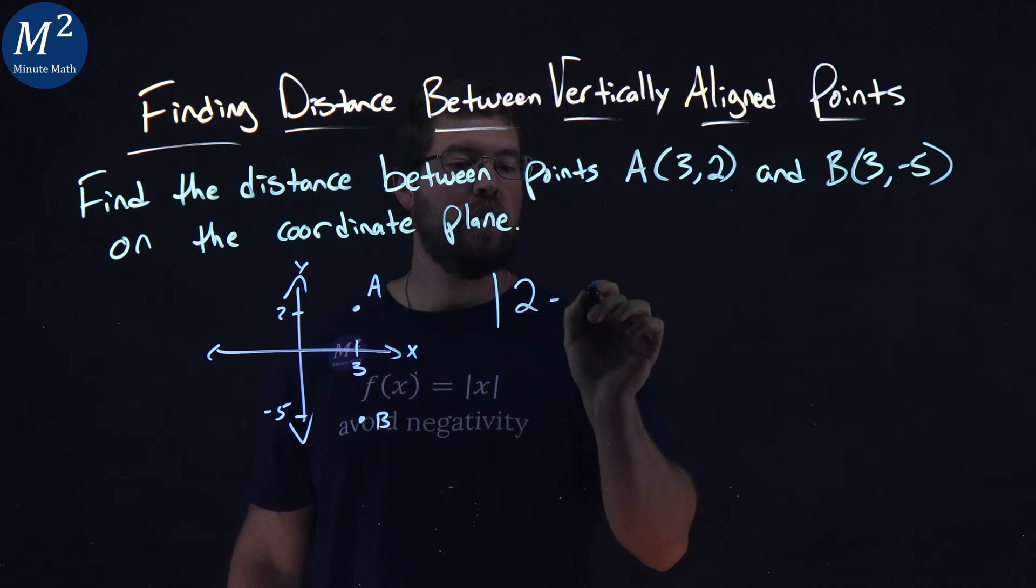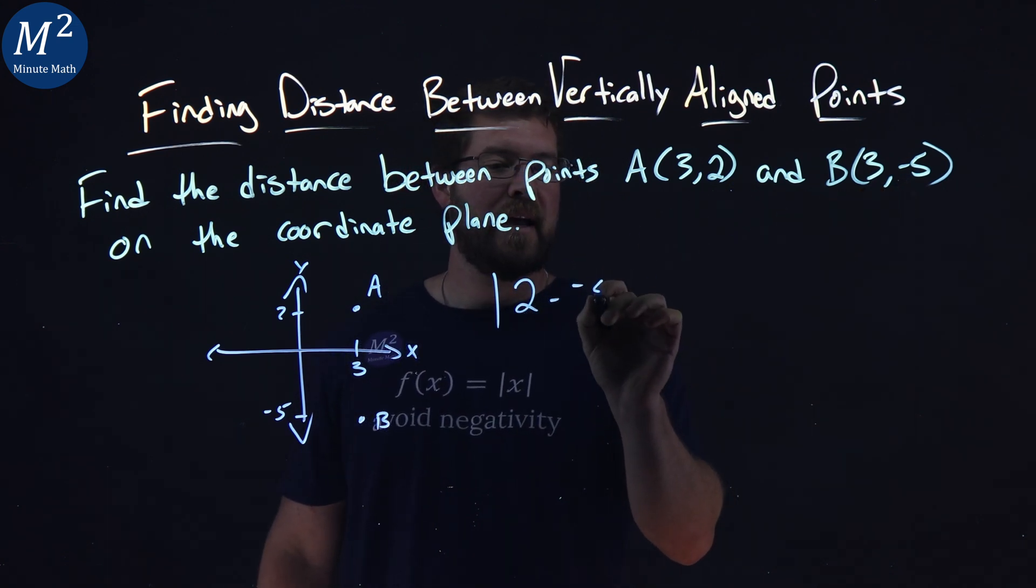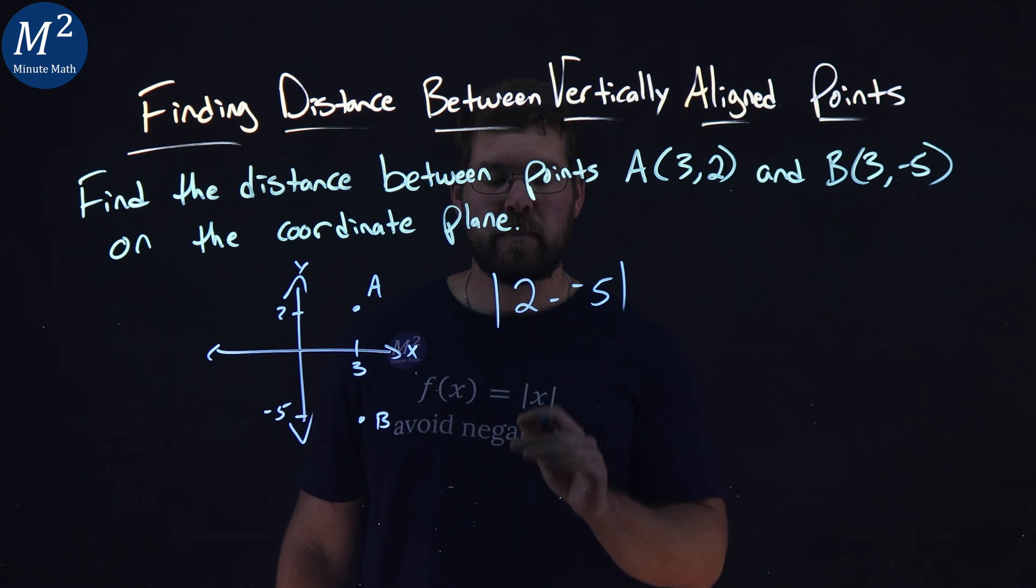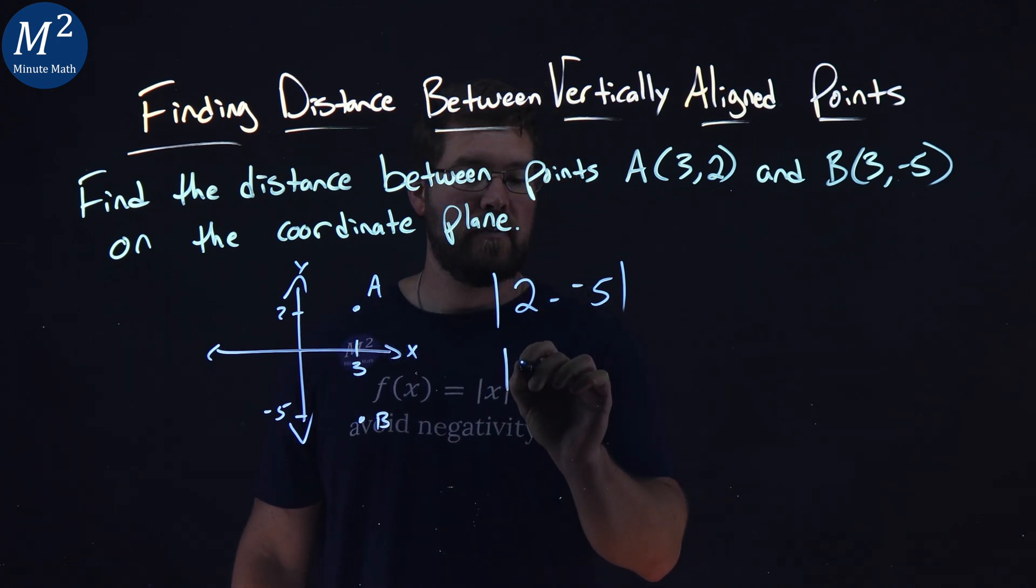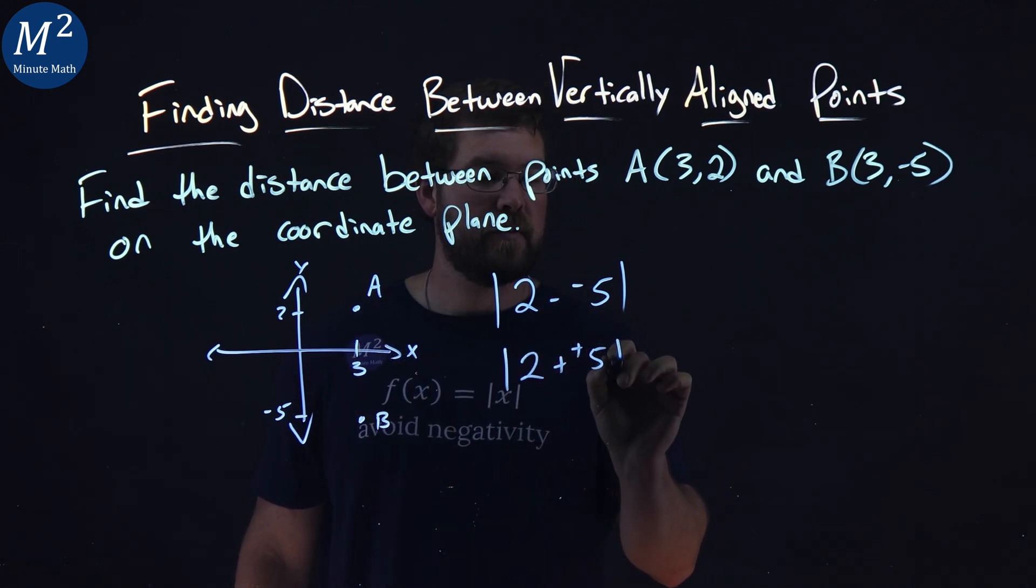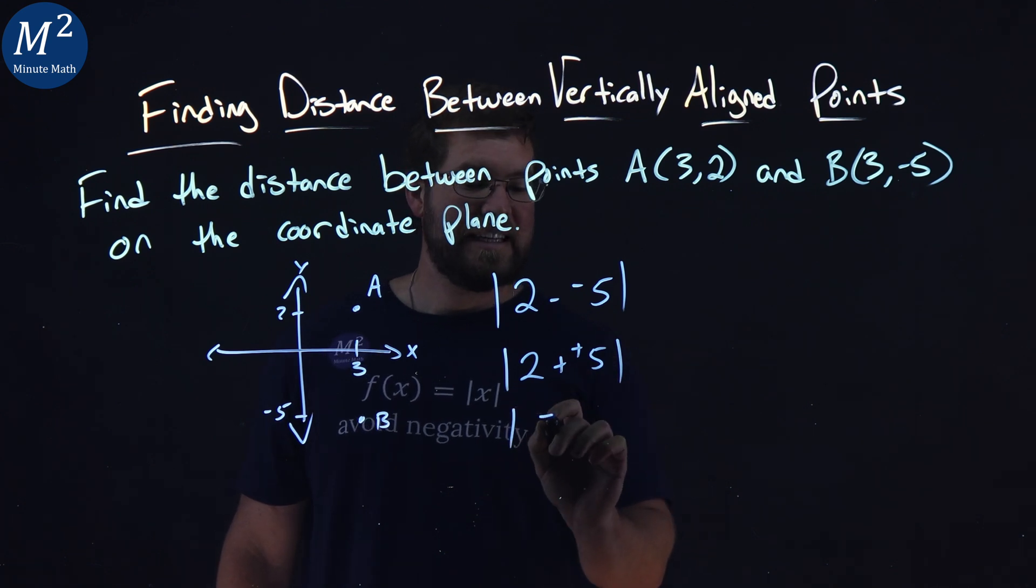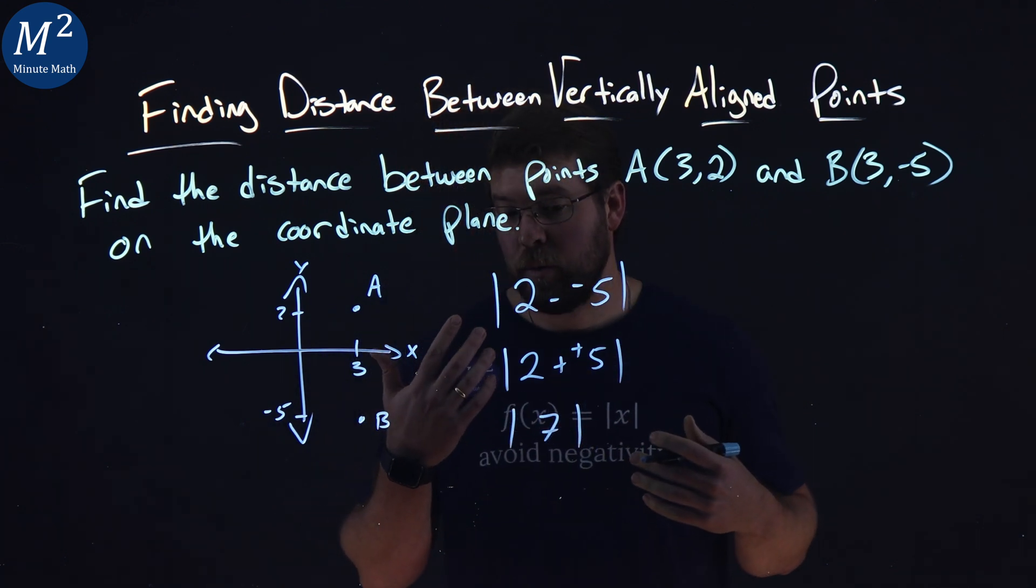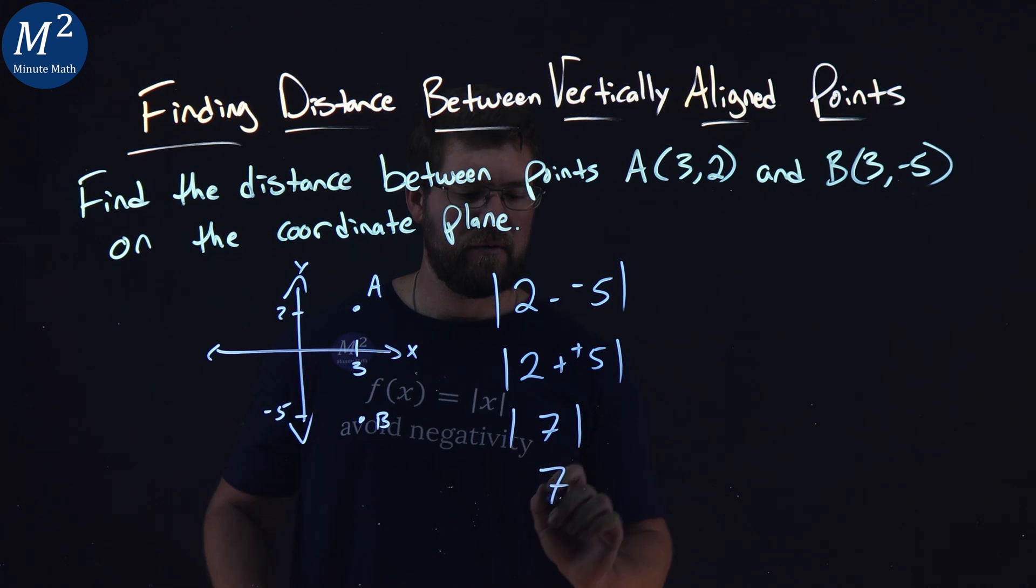Our first point: absolute value of 2 minus the second point, negative 5. Well, 2 minus a negative 5 is the same as 2 plus a positive 5. 2 plus 5 is 7, and the absolute value of 7 is a positive 7.